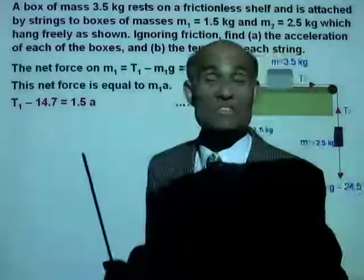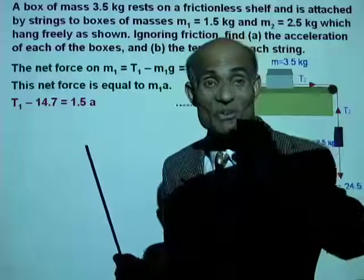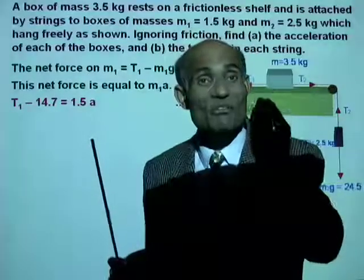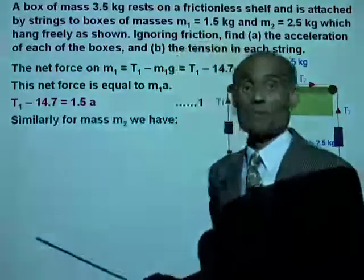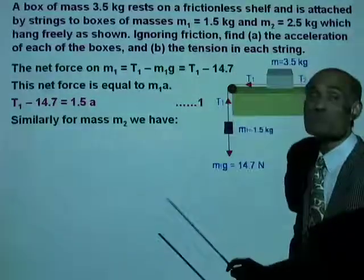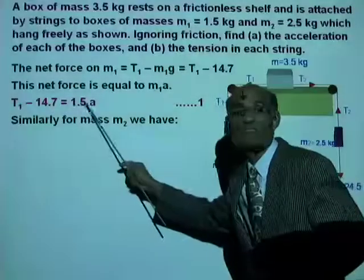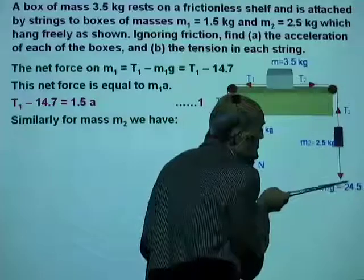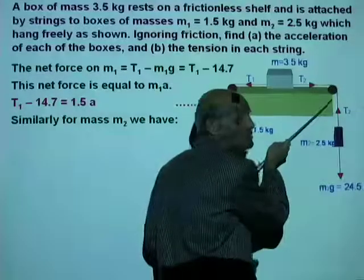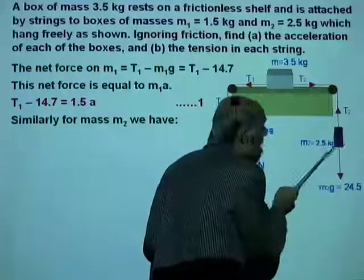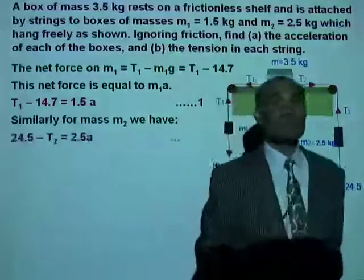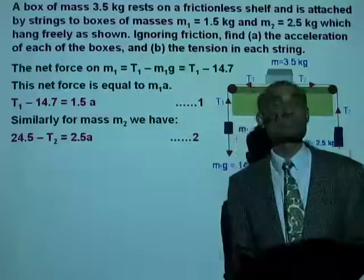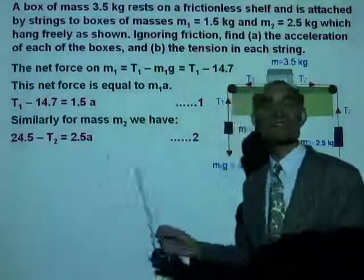Now remember, the easiest way to solve problems like this, as I told you, is isolate each object and find the net force on each of them. Similarly for mass M2, can you write an equation like this straight away? You can look at this and write it straight away. You say 24.5 minus T2 equal to M2A, 2.5A. There you are. 24.5 minus T2 equal to 2.5A. I don't think it needs a lot of explanation.